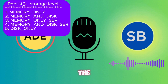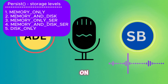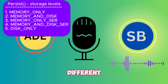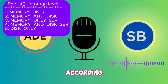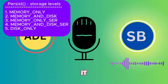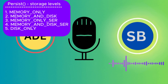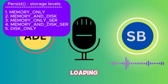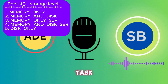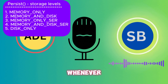DISK_ONLY stores the RDD partitions only on disk. Likewise, we can specify different storage levels according to our memory and job requirements. This helps fetch data from cache instead of loading it from the source each time.